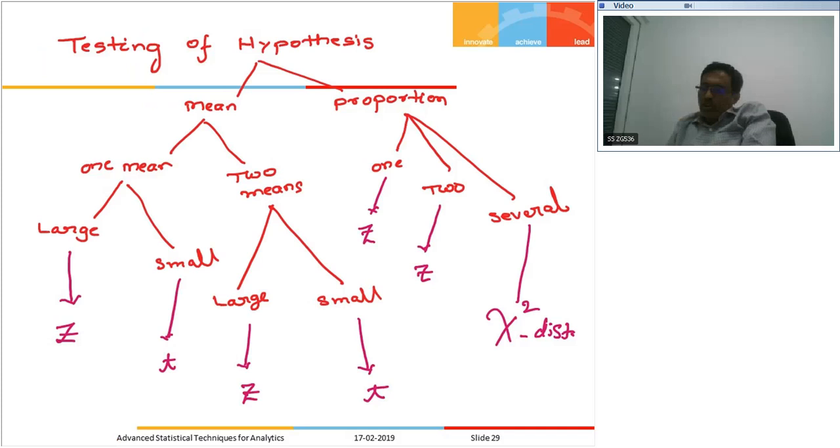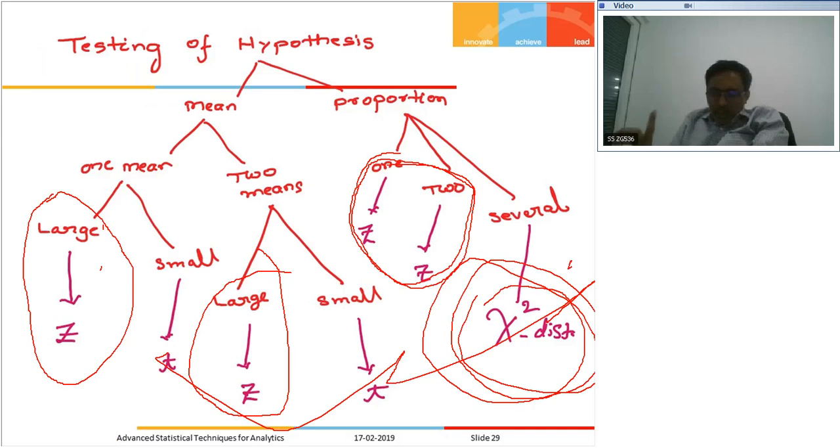I've shared the documents from the previous paper covering the topics we've covered till now. One is on Bayes theorem, the other one is on basic probability. I think I shared one document, PBT, with the recording.